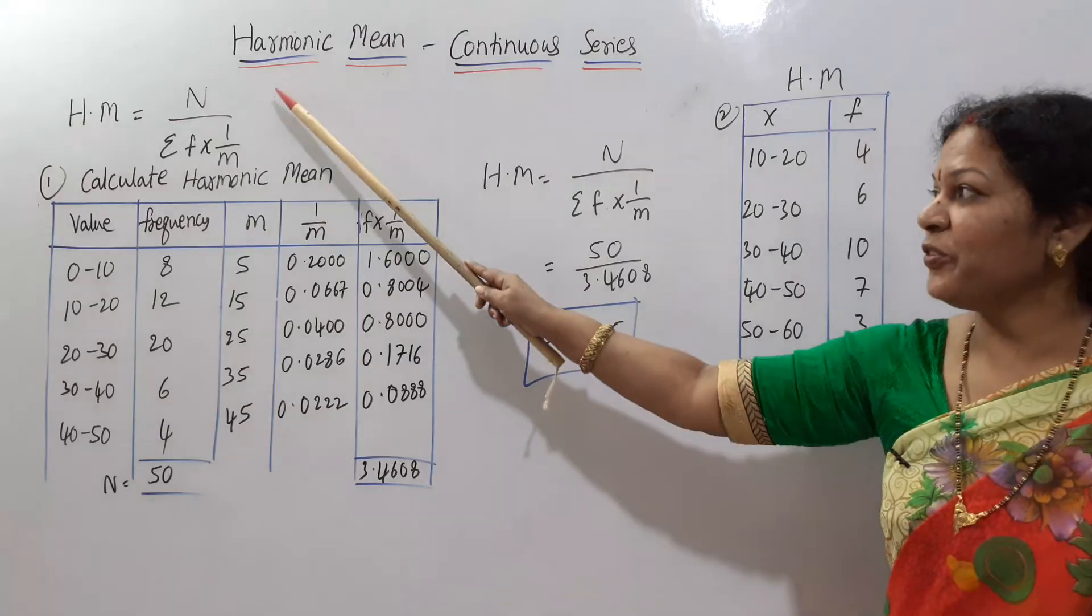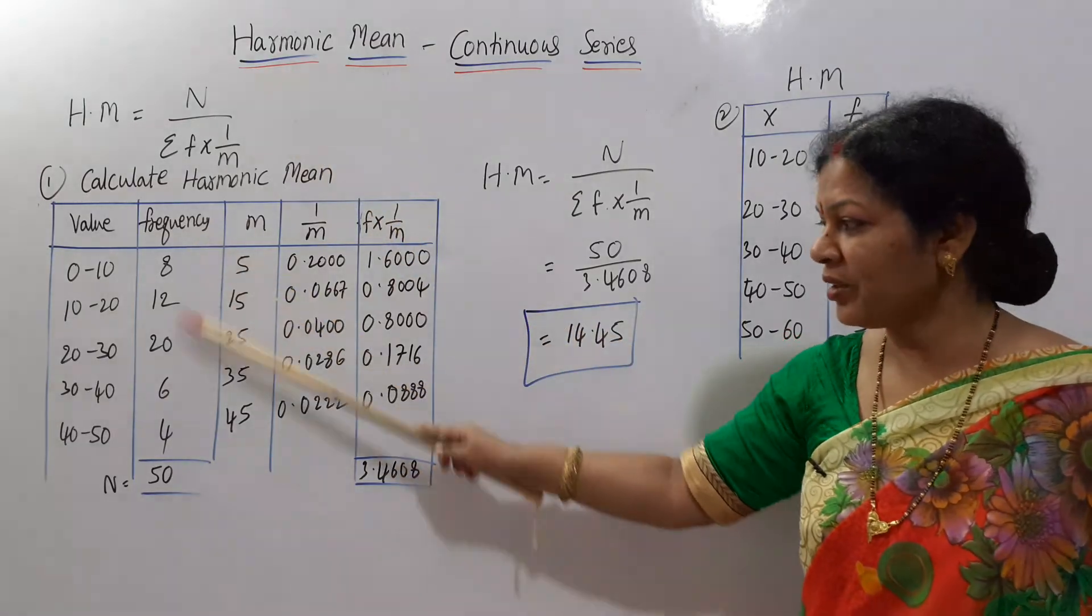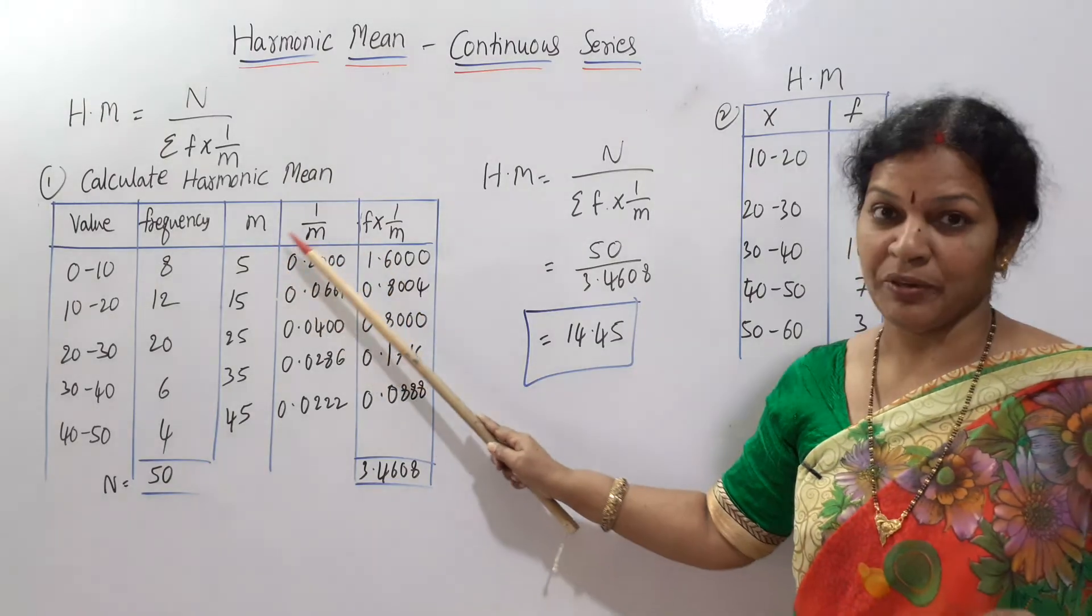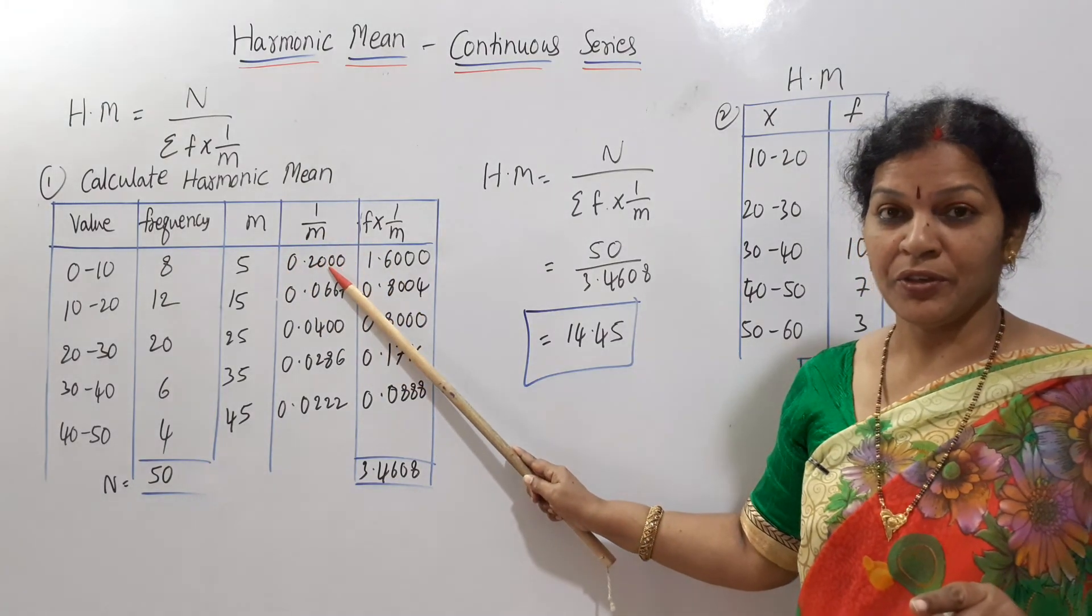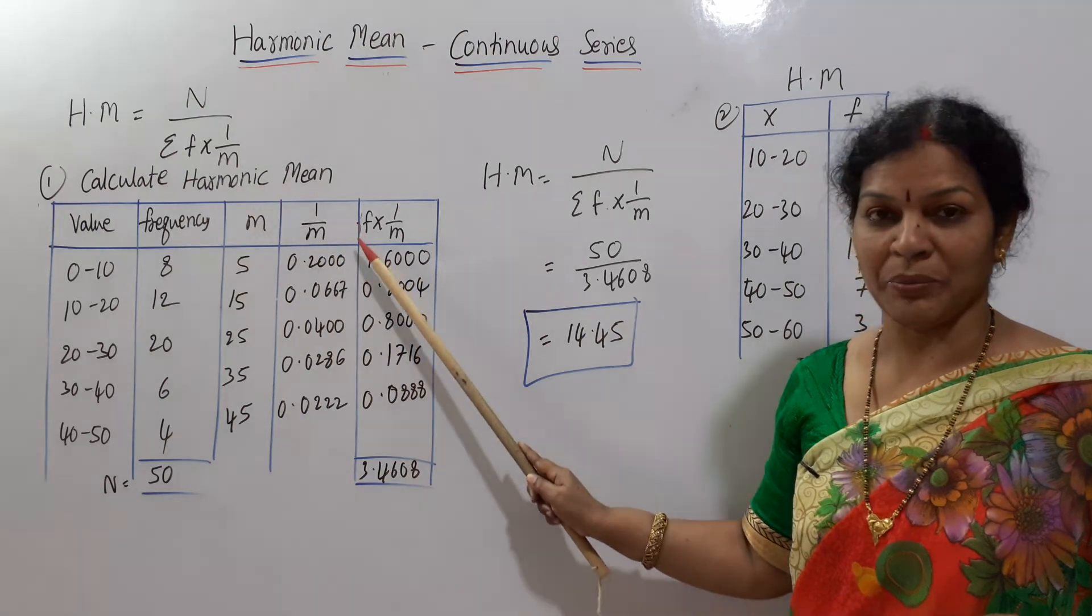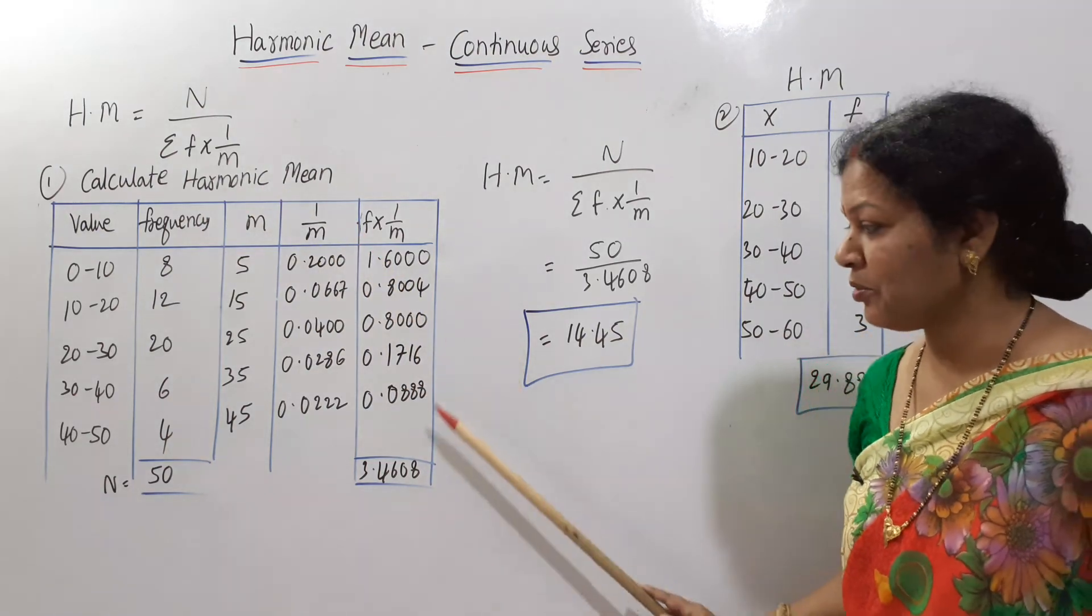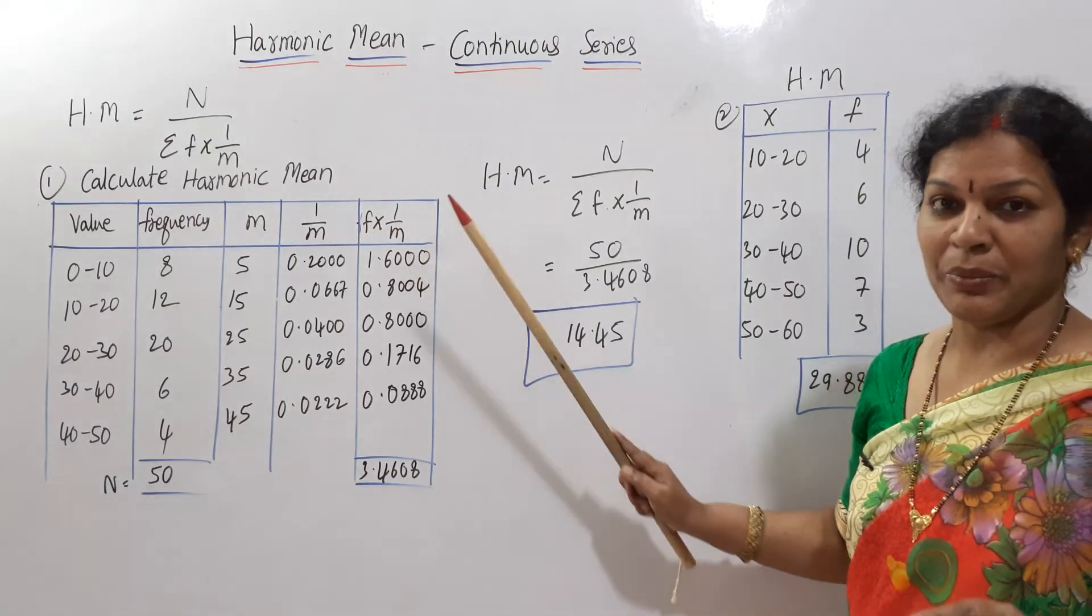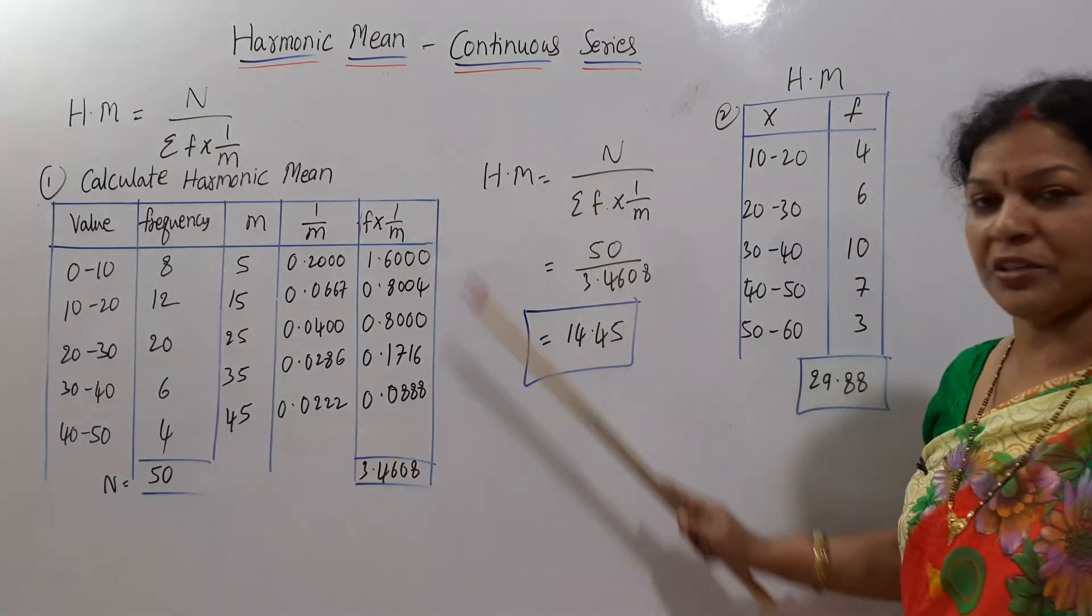So as per the formula, what we need? N total we have done. And F into 1 by M. First of all, M if you calculate, 1 by M you'll get. If you get 1 by M, then frequency into 1 by M, multiplication. So you got the sigma of frequency into 1 by M. This you got it. Apply it in the formula. Simple.